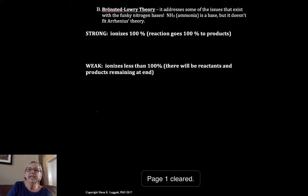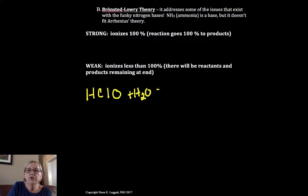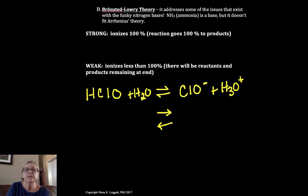Now, if it's weak, it goes less than 100%. For example, HClO plus water doesn't go 100%, so we're going to use a double arrow, forwards and back. Sometimes you'll see those as full arrows. I tend to write them as half arrows. I would get ClO- plus H3O+.